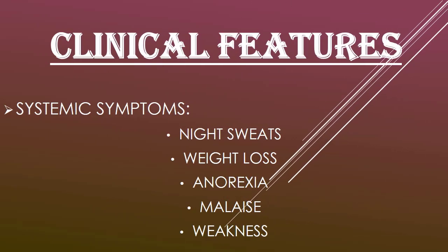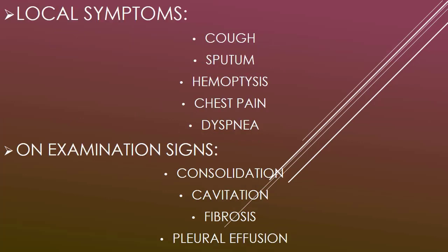Clinical features of secondary TB: Systemic symptoms include low-grade fever usually in the evening, night sweats, weight loss, anorexia, malaise, and weakness. Local symptoms related to the pulmonary system: an early symptom is cough — initially dry and later productive with sputum. Sputum is usually mucoid, and haemoptysis with blood streaks in sputum may occur. Dull chest pain is also present. Late symptoms include dyspnea, which may be due to fibrosis, pleural effusion, or spontaneous pneumothorax.